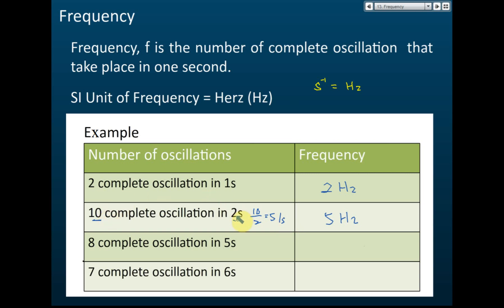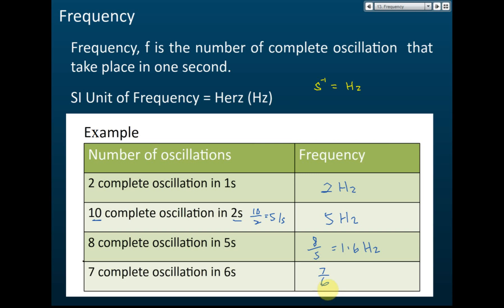Another example: the frequency equals 8 divided by 5, which equals 1.6 hertz. Frequency doesn't have to be a round number; it can be a fraction or a decimal. The last example: 7 complete oscillations in 6 seconds gives a frequency of 7 over 6 hertz. You can leave the answer as a fraction or convert it to decimal.